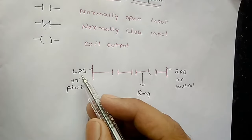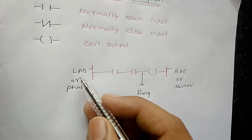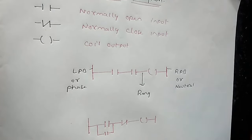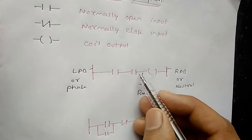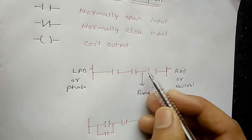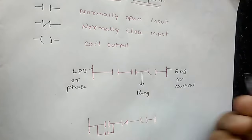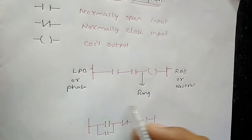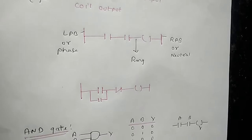This is LPB, or left power bar, and this is RPB, right power bar — also called neutral. This is a rung, from where the power supply moves to the output coil. This is the input. So this is an example of a ladder diagram.